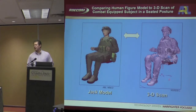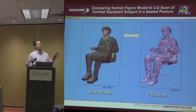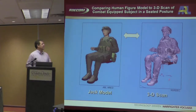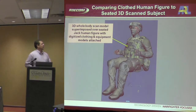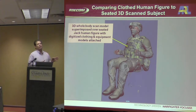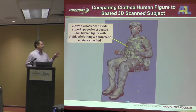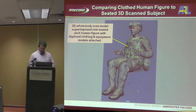One of the things we did, again working with Natick, was to take a subject that they had scanned with the clothing and equipment on, and obtain that same clothing and equipment along with the dimensions of the subject that was scanned, build the human figure model, and digitize individual pieces of equipment to put on the human figure model. There you can see the Jack model with the clothing and equipment superimposed over the scan — it was a pretty good match. We model the clothing and equipment as smooth objects, so we don't model the draping of the clothing, which is what sticks out on the legs. It's not an ideal method by any means, but it's better than a figure without any clothing.